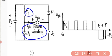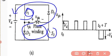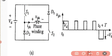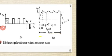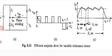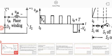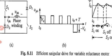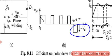Furthermore, when both switches S1 and S2 are turned off, the energy stored in the phase winding is fed back to the supply VD through diodes D1 and D2, which conduct in this condition. The current waveforms for this condition are shown in the figure.